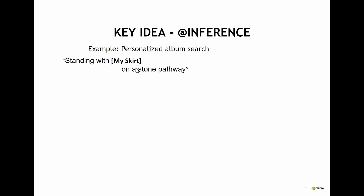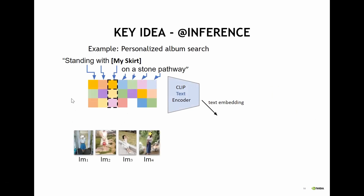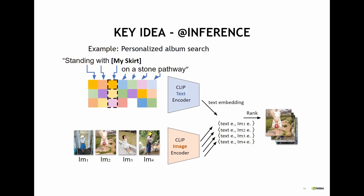During inference, we can look for an image of 'standing with my skirt on a stone pathway.' We use this concept, tokenize it according to F-theta, join it with the rest of the sentence, and embed it using the CLIP text encoder. Then using the CLIP image encoder, we embed each of the images and retrieve the top similar image, which should contain the same skirt.